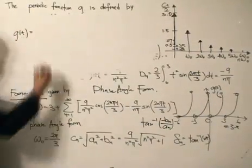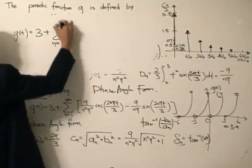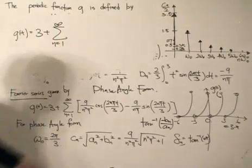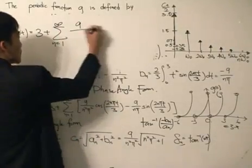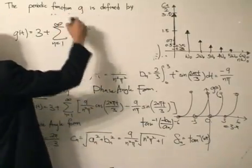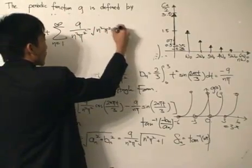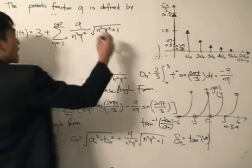We substitute cₙ inside, which is this one over there. So it's 9/(n²π²) multiplied by √(n²π² + 1), close the square root. Then we multiply that by cosine of nω, which is this one over here.